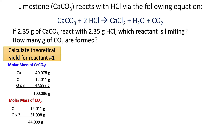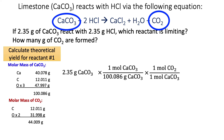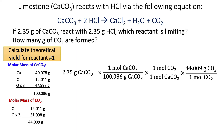Now let's calculate the theoretical yield for reacting all of the calcium carbonate and turning it into carbon dioxide. Starting with 2.35 grams of calcium carbonate, we use the molar mass of calcium carbonate as a conversion factor, then the mole ratio — which is one-to-one: one mole of CO₂ for every mole of CaCO₃ — and then the molar mass of carbon dioxide. Multiplying that all out gives a little over one gram. I'll leave it unrounded for now since we're not done with the problem.